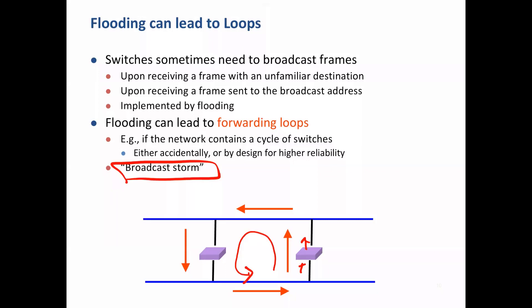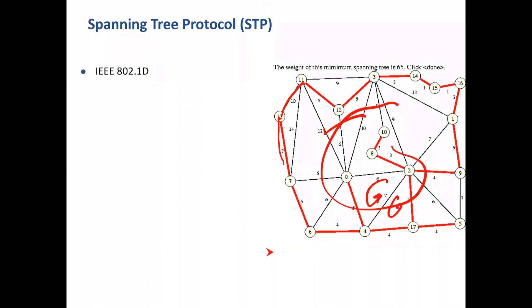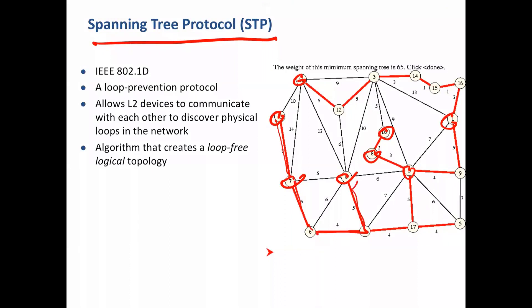Loops must be avoided when switches are interconnected. If there is a loop there is a problem. To design a system where all switches are connected without loops there must be a tree structure. You can run a distributed algorithm on each node to detect loops. There is a protocol that forms a spanning tree — if you've done a graph theory course you know what a spanning tree is. A spanning tree covers all nodes of a graph but has no loops.